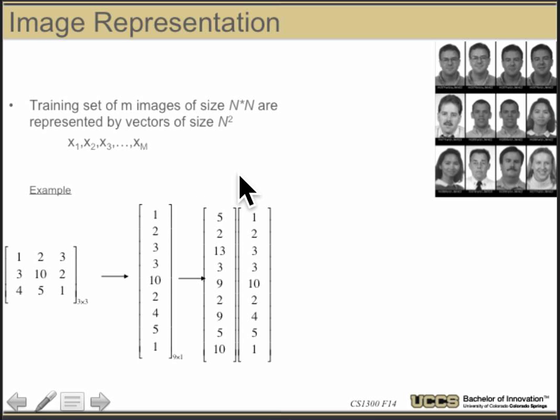Now if I have a bunch of images, I can stack all those vectors next to each other — take one or two images and stack them up — and now I get a matrix that represents a set of images.